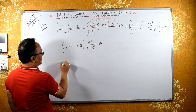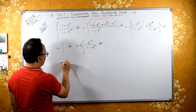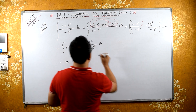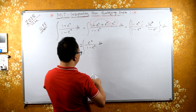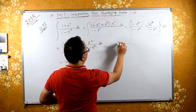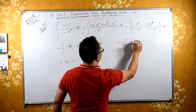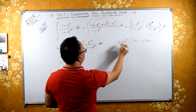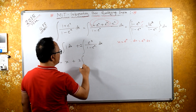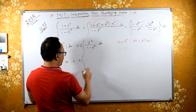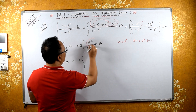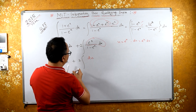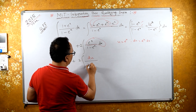Now this integral becomes x plus... Let us substitute. If I substitute u equals eˣ, then du equals eˣ dx. Therefore du is eˣ dx, so the integral 2 times eˣ dx upon (1 minus eˣ) becomes 2 du upon (1 minus u).